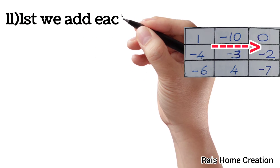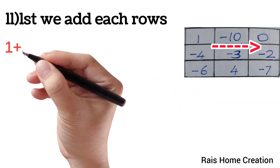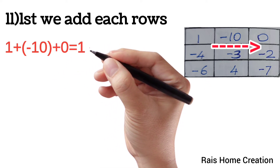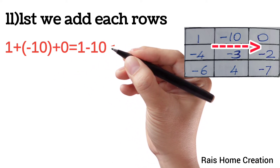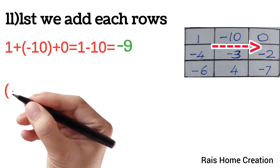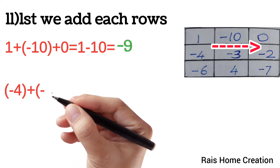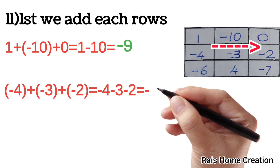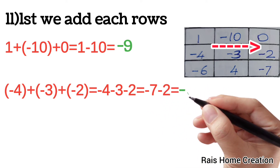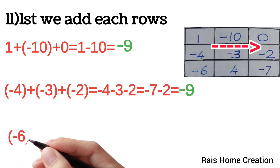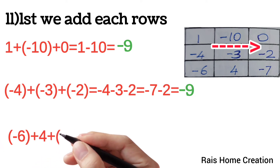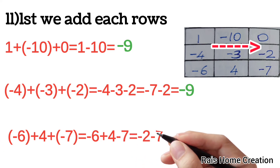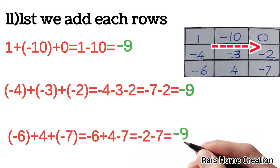In the second part, we add each row. 1 plus minus 10 plus 0 equal to 1 minus 10 equal to minus 9. Minus 4 plus minus 3 plus minus 2 equal to minus 4 minus 3 minus 2 equal to minus 7 minus 2 equal to minus 9. Minus 6 plus 4 plus minus 7 equal to minus 6 plus 4 minus 7 equal to minus 2 minus 7 equal to minus 9.